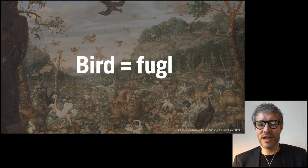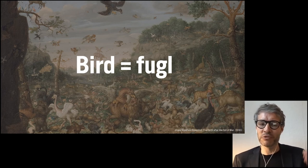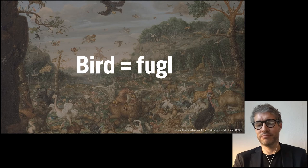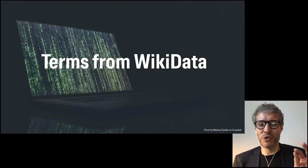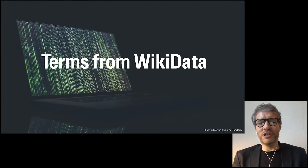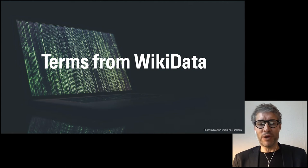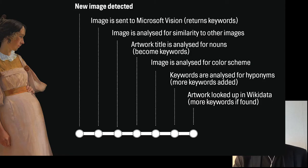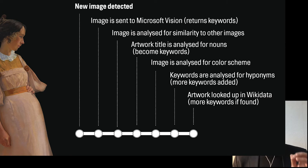We then translate these English terms into Danish, so 'bird' becomes 'fugl', and so on. But we want more. We also look up the artwork in Wikidata and pull down keywords added by human editors from there. We do a lot of things to let clever machines, or humans, help us describe and thereby connect the art.